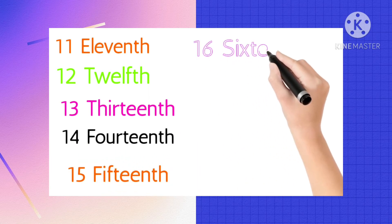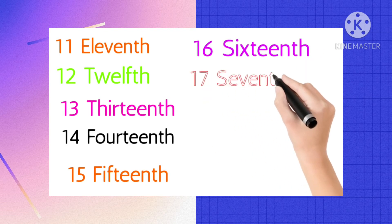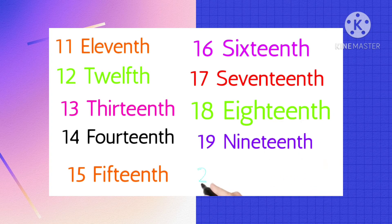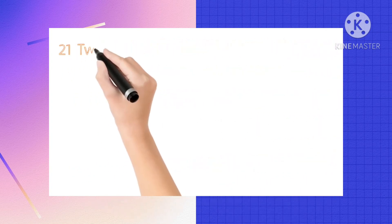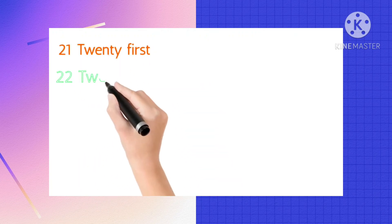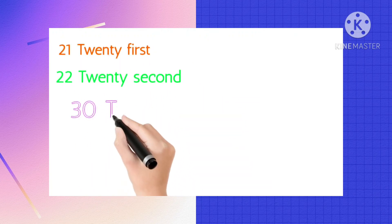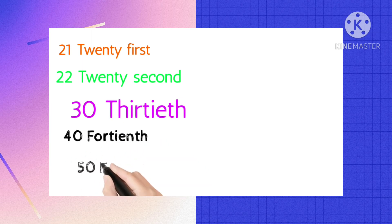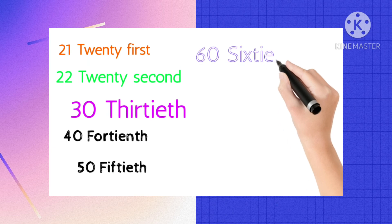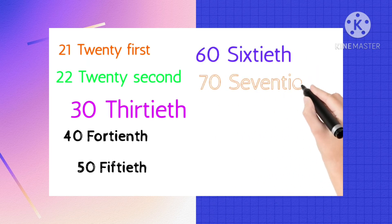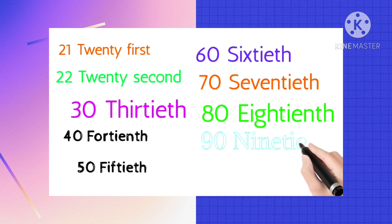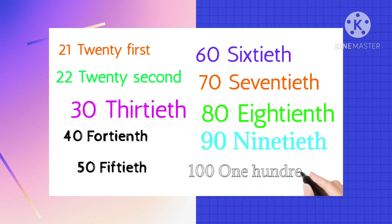16th, 17th, 18th, 19th, 20th, 21st, 22nd, 30th, 40th, 50th, 60th, 70th, 80th, 90th, and 100th.